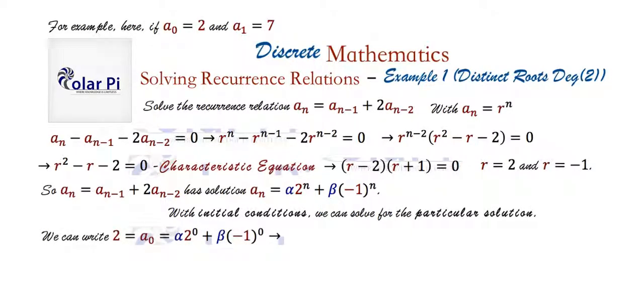Then we can use these two and write the 2 a zero is equal to. Well, this means that n is 0. So alpha times 2 to the 0 plus beta times negative 1 to the 0. So this simplifies nicely to just that. And then we can use a second initial condition and write a second equation involving alpha and beta. And that's this.